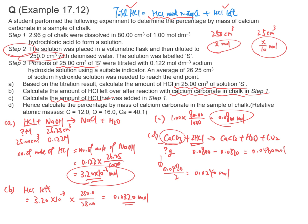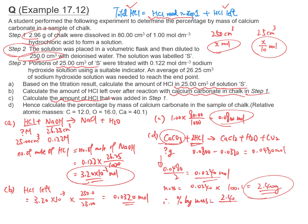The mole ratio of calcium carbonate to HCl is 1 to 2. So the number of moles of calcium carbonate is 0.0480 divided by 2 equals 0.0240 moles. The mass is 0.0240 times the molar mass of calcium carbonate (100.1) equals 2.40 grams. We have 2.96 grams of chalk and 2.40 grams of calcium carbonate in it, so the percentage by mass is 2.40 divided by 2.96 times 100, which equals 81.1%.